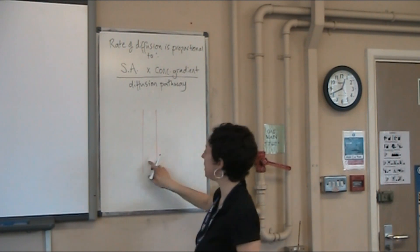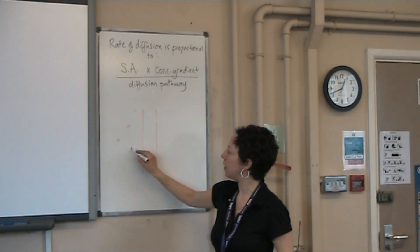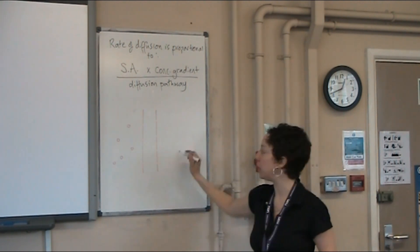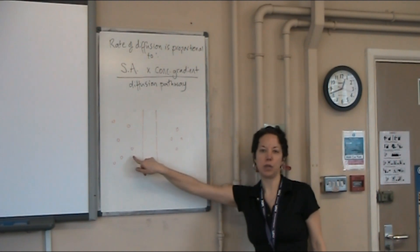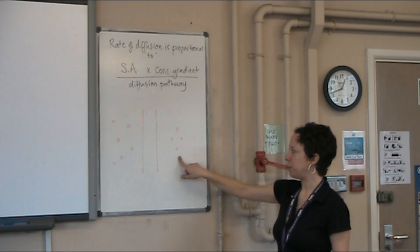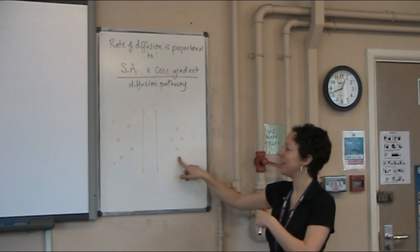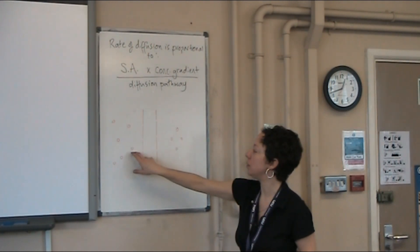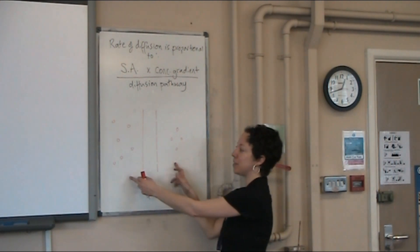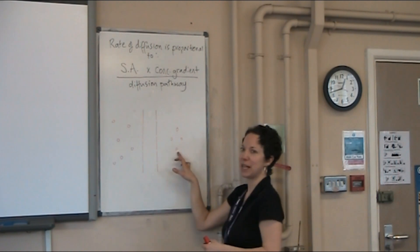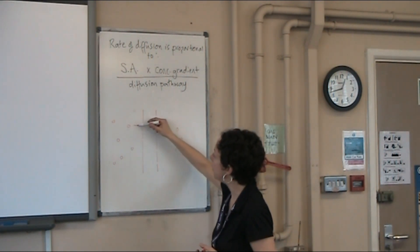Say this is a semi-permeable membrane — I'll draw some little holes in it. On one side we've got a number of molecules that can go through this membrane, and on this side we've also got a number of molecules. At the moment there are a few more molecules on this side than on this side. Diffusion says that molecules will diffuse from a high to a low concentration. So these molecules will want to diffuse from this side to that side, but they're going to be moving quite slowly because the concentration gradient isn't that large. The gradient isn't huge — so if they were going downhill, it would be a very small hill.